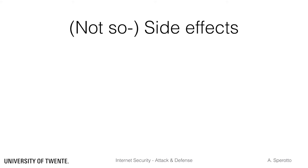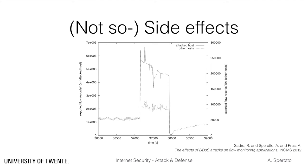This attack also gives us the opportunity to have a look at possible side effects of a DDoS attack. So far, we have focused mainly on the effect of a DDoS attack on the target, namely stopping the target from delivering service. Implicitly, we assumed that we would be able to observe such an attack. This might not always be the case. Let's have a look at this picture, which is another view of the same attack we just discussed, but from the point of view of the measurement point.